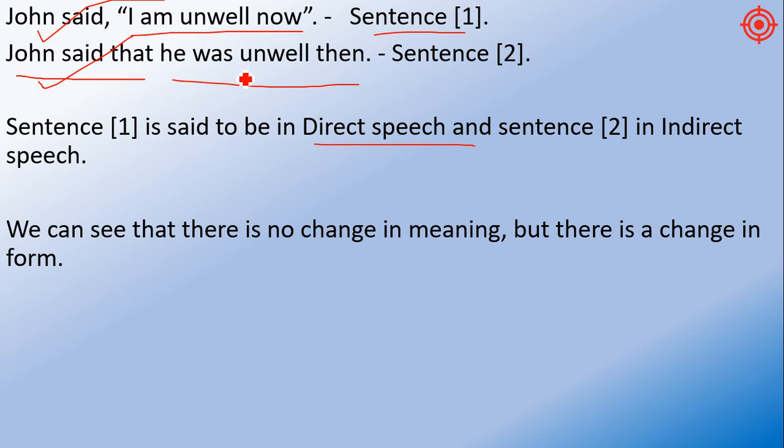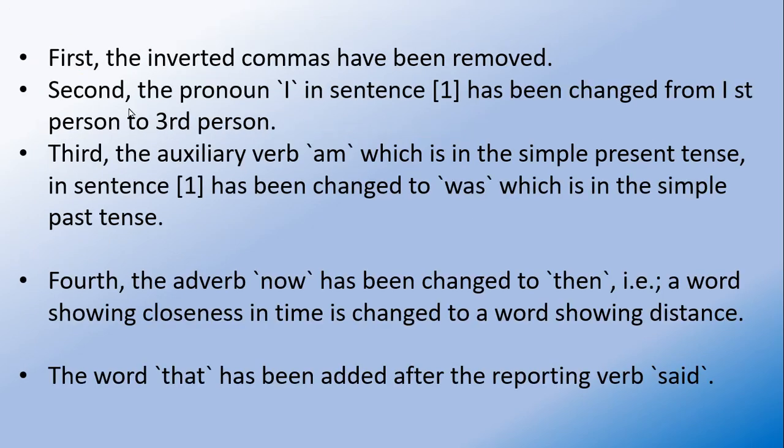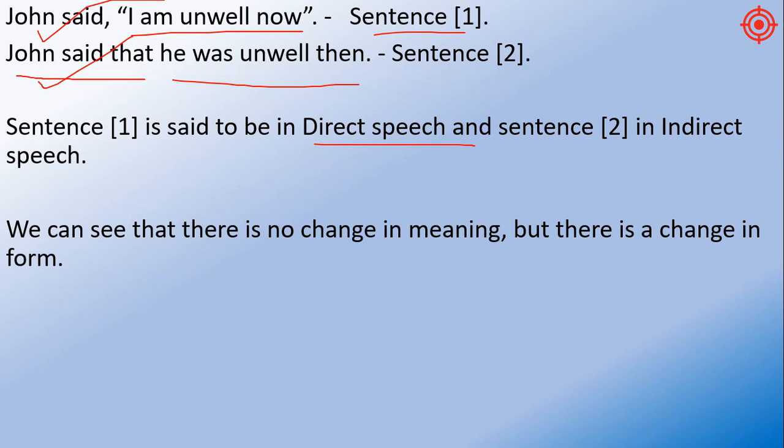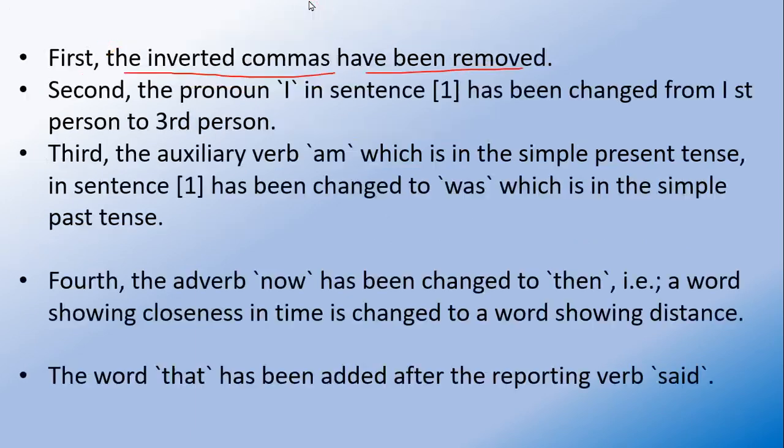Sentence one is said to be in direct speech and sentence two is in indirect speech. We can see that there is no change in meaning, but there is a change in form. So we can see what are the changes in both sentences. First, inverted commas have been removed.